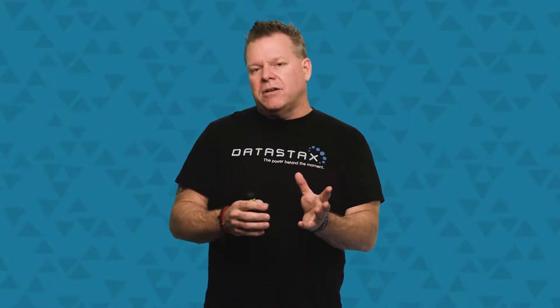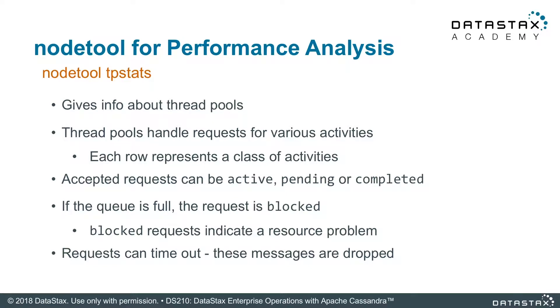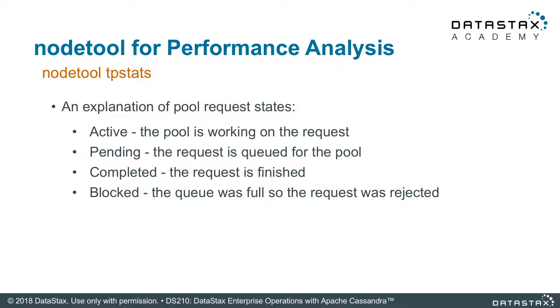The last command I'm going to talk about is tpstats — thread pool statistics. This used to be my go-to all the time. In the early days of Cassandra, thread pools were really important with the SEDA architecture. Since Cassandra has moved away from SEDA, this isn't quite as important, but it still gives you really useful information. Thread pools are pretty much what's running inside of the Cassandra node itself, and you can see interesting statistics that give you a clue of what's actually happening, especially with performance. The four states you can see are: active, pending, completed, and blocked.